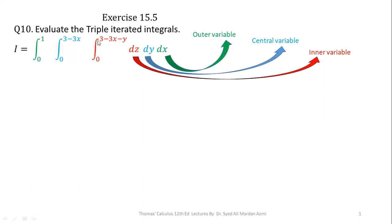The limits of Z are 0 to 3 minus 3X minus Y. The limits of Y are 0 to 3 minus 3X, and the limits of X are 0 to 1. We will always start integration from the most inner variable and move towards the outer variable. So we will first integrate with respect to Z, then apply integration with respect to Y, and finally with respect to X.